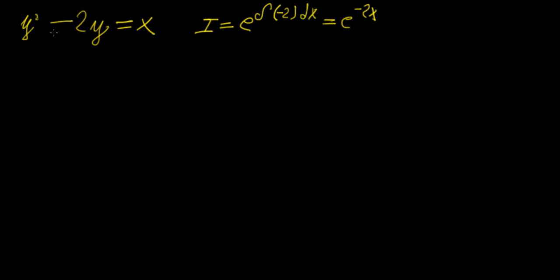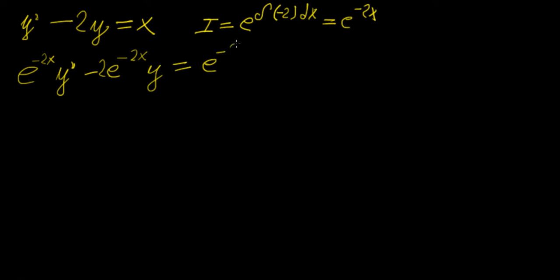Once you multiply the whole differential equation by the integrating factor, that constant at the front just cancels out as we perform algebraic manipulation. So multiplying through gives us: e^(-2x) · y' - 2e^(-2x) · y = e^(-2x) · x. That's the equation we have so far.